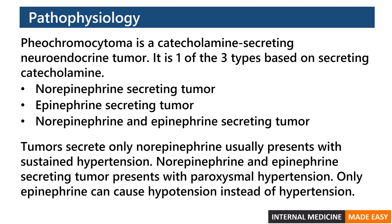Pheochromocytoma is a catecholamine-secreting neuroendocrine tumor. It is classified into three types based on the secreted catecholamine: norepinephrine-secreting, epinephrine-secreting, or both. Tumors secreting only norepinephrine usually present with sustained hypertension, while norepinephrine and epinephrine-secreting tumors present with paroxysmal hypertension. Only epinephrine can cause hypotension instead of hypertension.